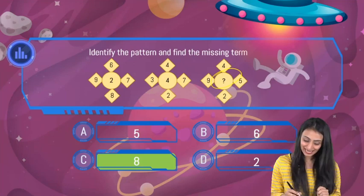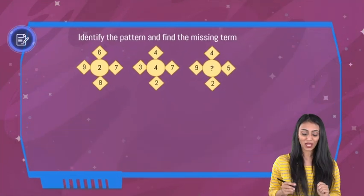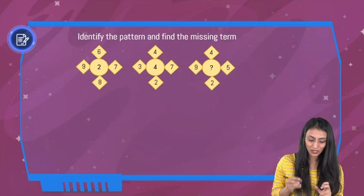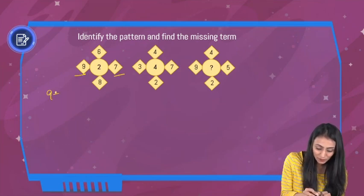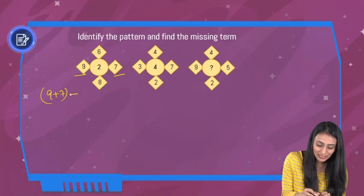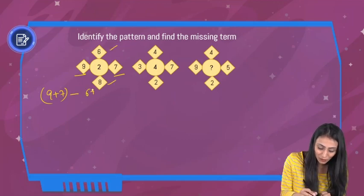How we arrived at that, let's quickly take a look at the solution. If you take a look at the first figure, you can see that 9 plus 7 is going to be 16. If I subtract the sum of 6 plus 8, which is 14, I get 2, which is here.